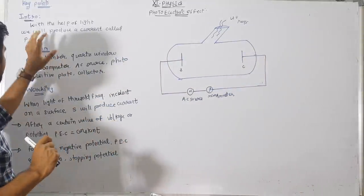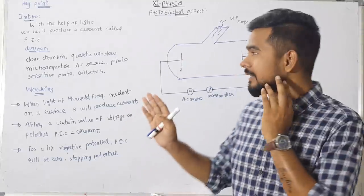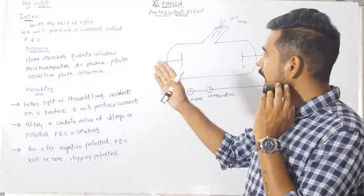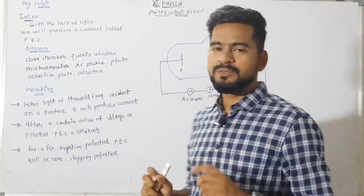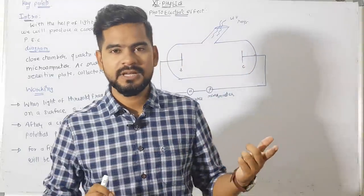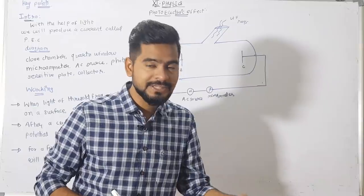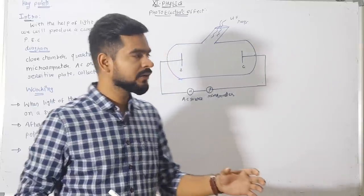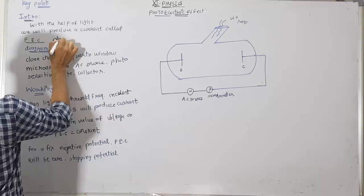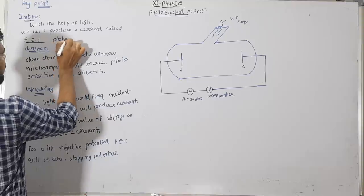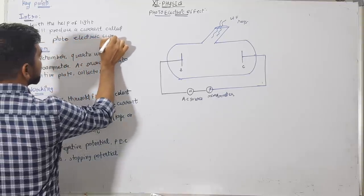Talking about the introduction: with the help of light we will produce a current called PEC — photoelectric current.